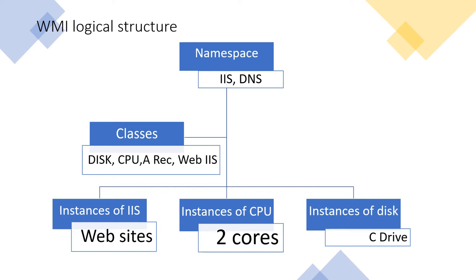Going further into the front end — like creating some sites in IIS — those are instances. If I see multiple cores in a CPU, like in a dual-core processor we can see two cores, those are instances. Similarly, if I see C drive, D drive, E drive — multiple disk drives — those are instances for disk, instances for CPU, and instances for IIS.